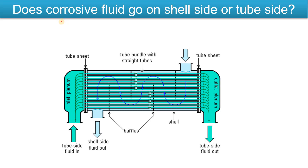Hello, Core Engineering family! In this video, we are going to discuss: does corrosive fluid go on the shell side or tube side in the shell and tube heat exchanger? So the question arises — where should it go? Should it flow through the shell side or should it flow through the tube side?